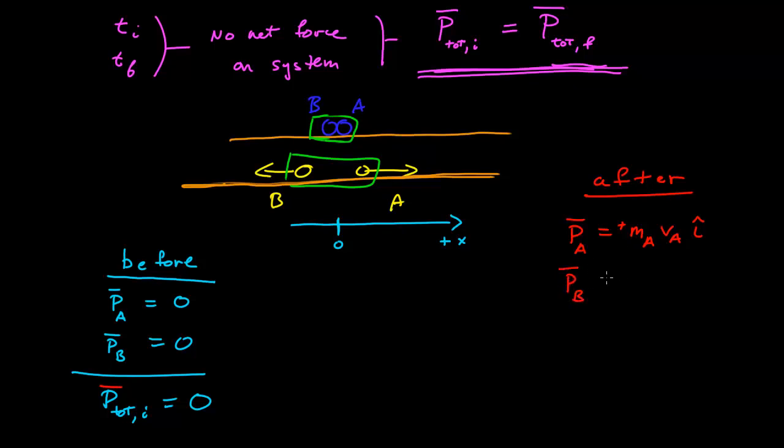Okay. My momentum of B, then, is equal to the mass of B times the velocity of B. It's along the x direction, but of course it's going in the negative x direction, so it's minus.